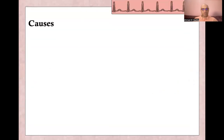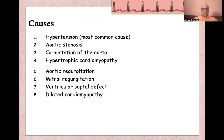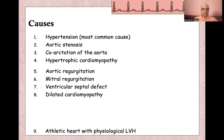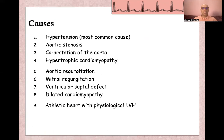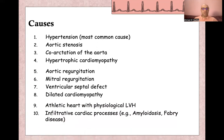There are many causes for left ventricular hypertrophy. Hypertension is the most common cause. Aortic stenosis, coarctation of the aorta, and hypertrophic cardiomyopathy are all examples of pressure overload. Aortic regurgitation, mitral regurgitation, ventricular septal defect, and dilated cardiomyopathy are all examples of volume overload. Athletic heart with physiological LVH can also be seen, and infiltrative processes like amyloidosis or glycogen storage disease can cause LVH.